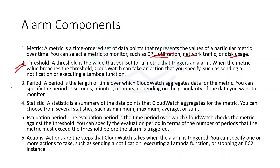Then we have period. Since we do not want false alarms, the period is the length of time over which CloudWatch aggregates the data for the metric. It can be in seconds, minutes, or hours, depending on the granularity you want your data monitored with.